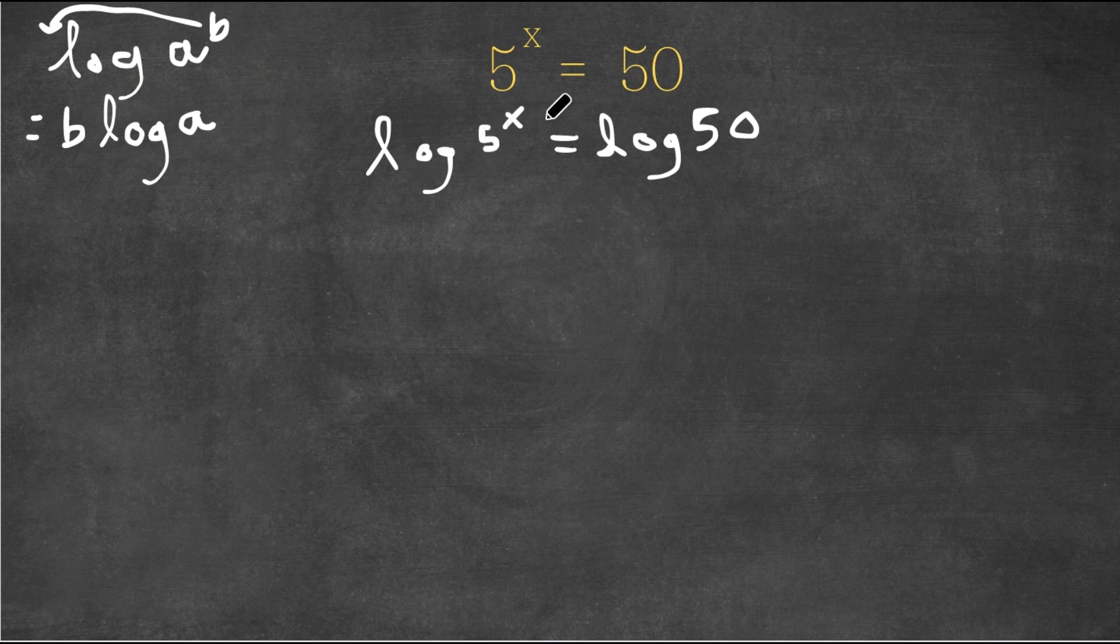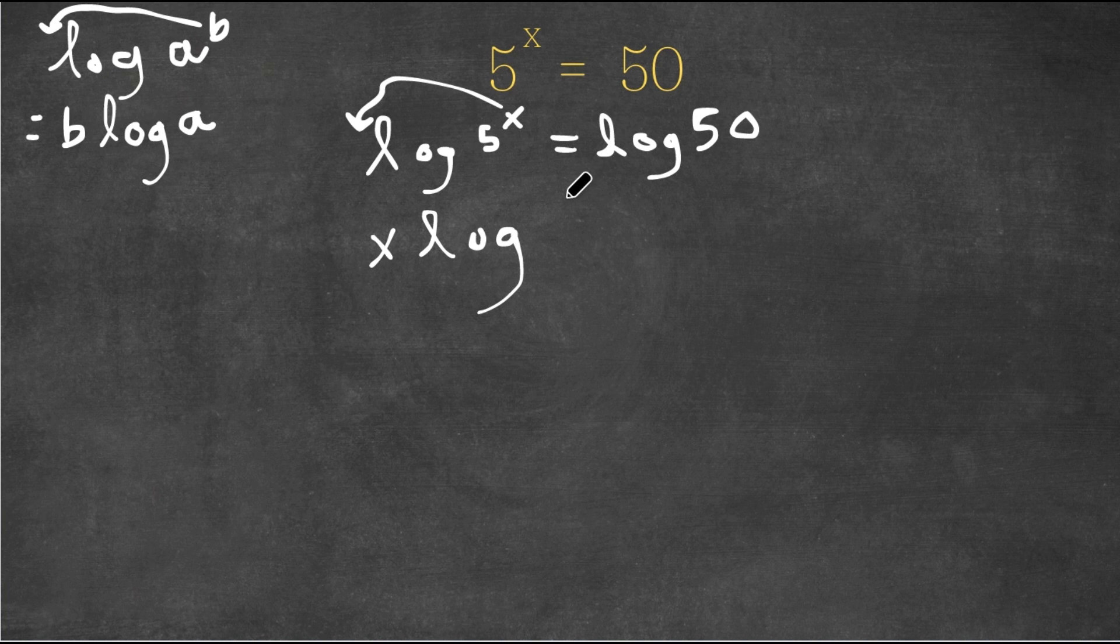So that's exactly what I'm going to do to log 5 to the power of x. We can think of 5 as a and x as b. So I'm going to move the x to the front of the logarithm. So this would be equal to x times log 5 is equal to log 50.